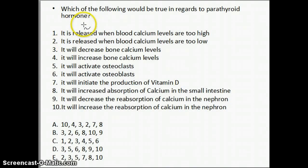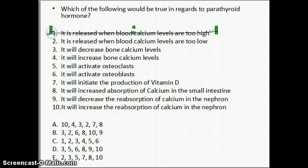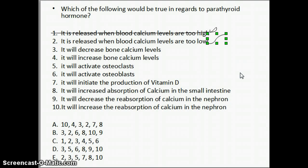Let's look at the options and cross off the incorrect ones. Option one — it is released when blood calcium levels are too high — that is incorrect. Calcitonin from the thyroid gland is released when blood calcium levels are too high. Option two — released when blood calcium levels are too low — that is the correct response for parathyroid hormone. Low blood calcium levels are a lot more common, and that's why parathyroid hormone is the major regulator of blood calcium levels.